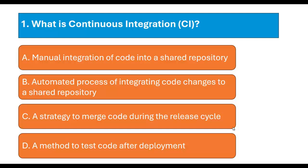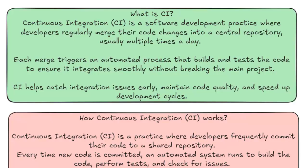The correct answer is Option B: Automated process of integrating code changes to a shared repository. CI stands for continuous integration. Continuous integration is a software development practice where developers regularly merge their code changes into a central repository, usually multiple times a day. Each merge triggers an automated process that builds and tests the code to ensure it integrates smoothly without breaking the main project. CI helps catch integration issues early, maintain code quality and speed up the development cycle.